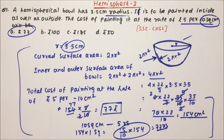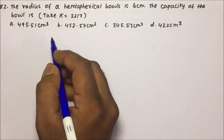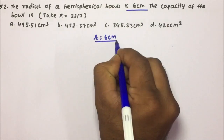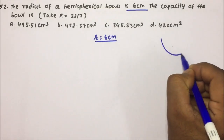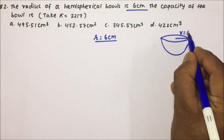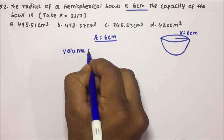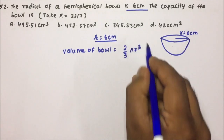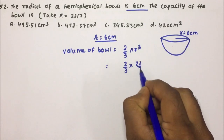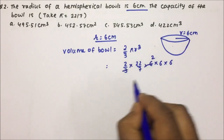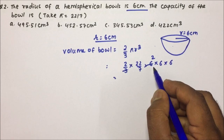Friends, I have taught this question by a very simple method. If you have any doubt, please put a comment in the comment box and I will reply. Now moving to question number two: the radius of a hemispherical bowl is 6 centimeters. The capacity of the bowl is nothing but the volume of the bowl, which equals the volume of a hemisphere: 2/3 × π × r³.